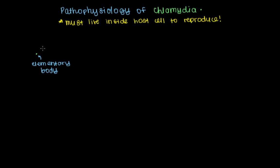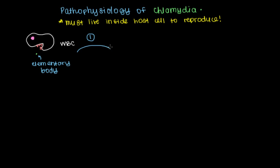The first step of chlamydia infecting our body is that it needs to somehow enter a cell, and the way that works is because of our white blood cells. This white blood cell is similar to most cells in our body in that it has a nucleus, where all the genetic information for the cell on how to survive and make proteins is stored. When a white blood cell sees this elementary body — this unusual particle that shouldn't exist in our body — it wants to eat it. This process by which the white blood cell swallows the elementary body or any foreign particle is referred to as phagocytosis.